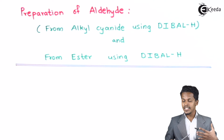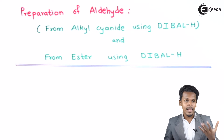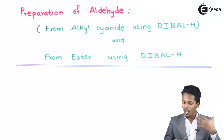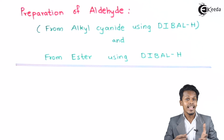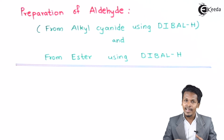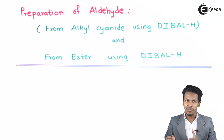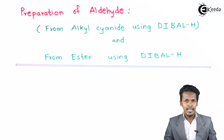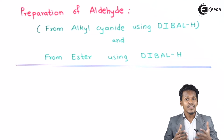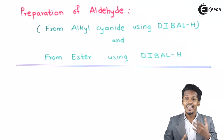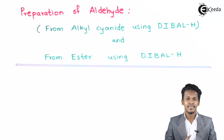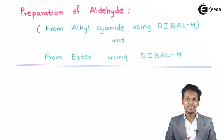We are going to talk about how we can convert an alkyl cyanide to an aldehyde, and also how we can convert an ester into an aldehyde. These are the two reactions I am going to discuss, along with the general reaction, where we are using diisobutyl aluminum hydride.